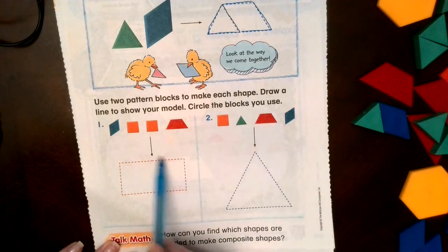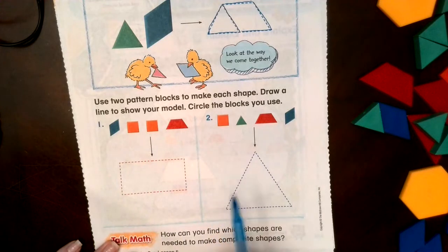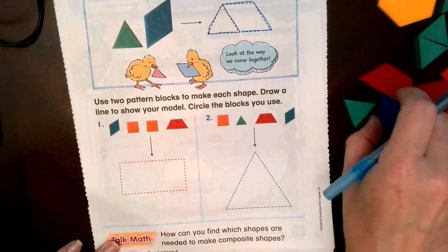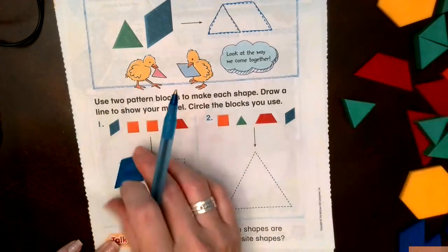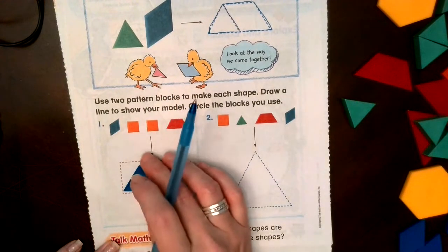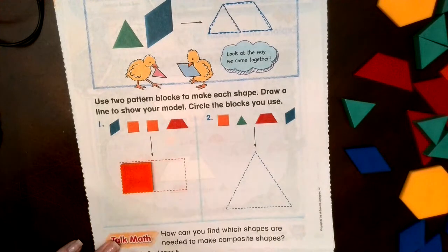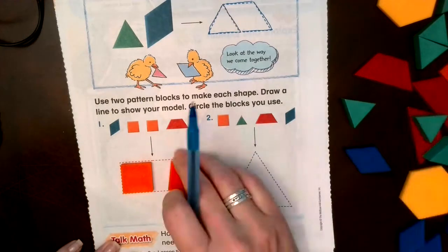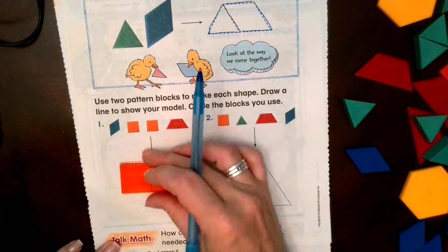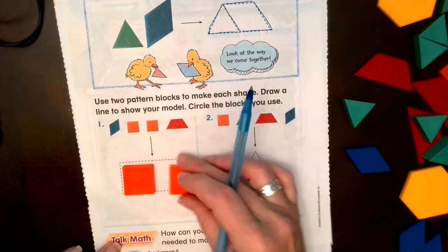All right, I want to make a rectangle. Which of these shapes do you think I should use? If I try this in here, let's try and turn this. Don't really see how this is going to work. Let me try. Okay, look at that, two squares makes a rectangle.